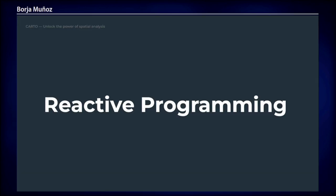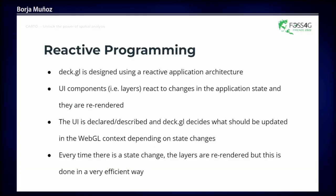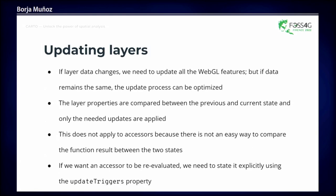DeckGL uses a reactive application architecture, meaning UI components like layers depend on application state. Whenever the state changes — perhaps from user interaction — DeckGL checks the previous and current state and decides what to update. Layers are re-rendered efficiently when application state changes. Key considerations: if data is not changing, re-rendering is cheap; if data is changing, WebGL buffers need to be reloaded. When working with accessors, you must use the update_triggers property to tell the layer which variable changes should trigger a re-render.